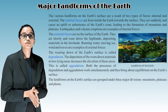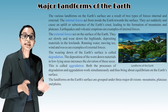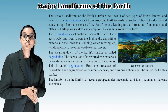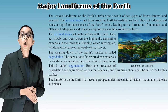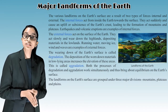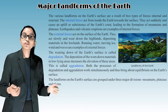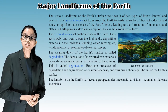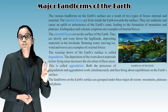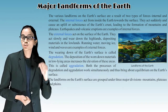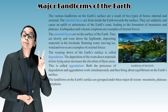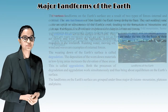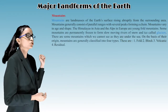Both the processes of degradation and aggradation work simultaneously and thus bring about equilibrium on the earth's surface. The landforms on the earth's surface are grouped under three major divisions: mountains, plateaus and plains.